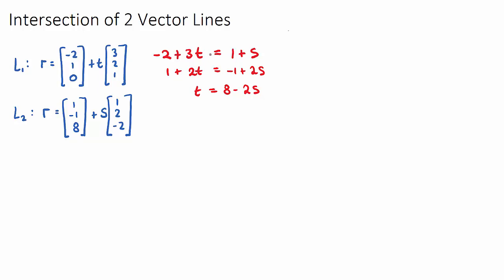You might need to re-familiarize yourself with simultaneous equations and how we substitute things. But I've spotted here that t is by itself: t is equal to 8 minus 2s.